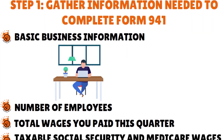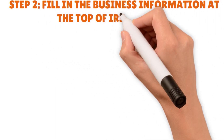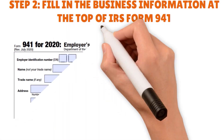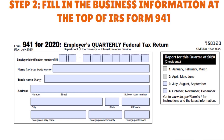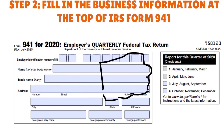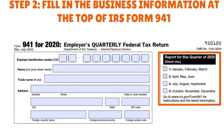Step two: fill in the business information at the top of the form, as seen on the screen. After gathering your info, start filling out the form. This section asks for basic information about your business — your EIN, your name, trade name if any, and your address. On the right side, you indicate which quarter of the year you are reporting for by placing a check in the correct box: January, April, July, or October, depending on the quarter.